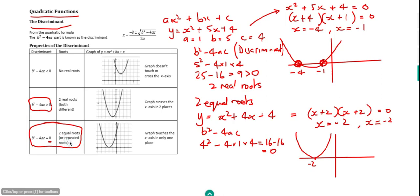This is also called two repeated roots. A consequence of this is that the graph, if we were to sketch it, only touches the horizontal axis — it doesn't cross it at all.